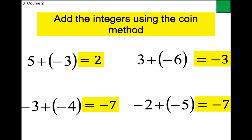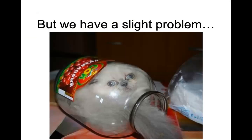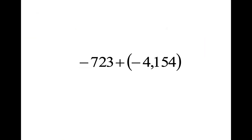Who's the smarty pants that wants to tell me what the problem with the coin method is? The problem is that you don't want to use it for bigger numbers. Technically it would get us to the correct answer, but it would take quite a few hours for large numbers. So we are going to come up with rules — and the coin method is where the rules come from. Yes, it's an emergency technique you can always use, but we need rules for numbers like negative 2,348 plus 1,607.